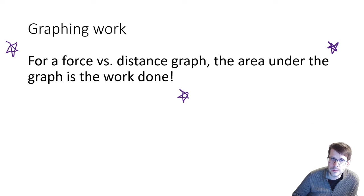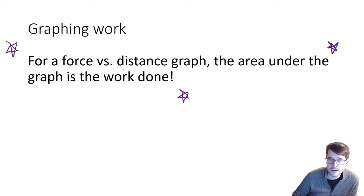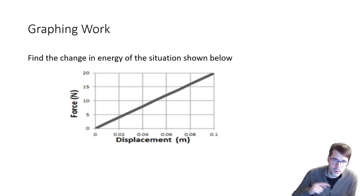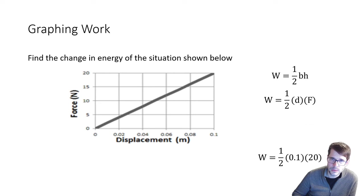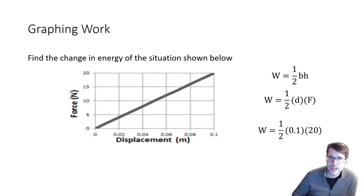Pause the video and write this down if you haven't: for a force versus distance graph, the area under the graph is the work done. With changing forces, we can figure out how much work is done. Here's an example: a force versus displacement graph in a triangle shape. We use the area of a triangle — one-half times base times height — so it's one-half times 0.1 meters times 20 newtons, which gives us 1 joule.